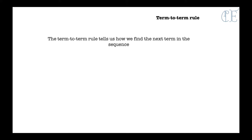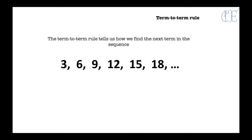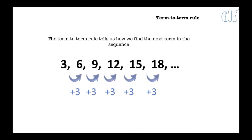The term to term rule is what tells us how we find the next term in a sequence. So if we have this sequence here, in order to find the term to term rule we need to know what the difference is. We've found the difference and that's 3. So the term to term rule for the above sequence is add 3.